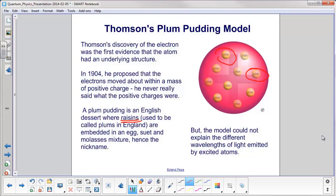However, and this is going to be a continuing thread, as new models were proposed and analyzed, they found out that they could explain some phenomena of the atom, but not all. And in this case, the plum pudding model could not explain the different wavelengths of light emitted by excited atoms.